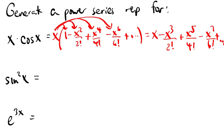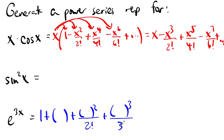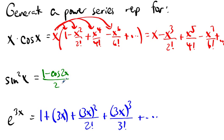You can find a general term for x·cos x. For e^(3x): we know e^x = 1 + x + x²/2! + x³/3! + ..., so e^(3x) = 1 + 3x + (3x)²/2! + (3x)³/3! + ... and you can generate the nth term. For sin²x, recall from chapter 8 that sin²x = (1 − cos 2x)/2, which equals 1/2 − (1/2)·cos(2x).